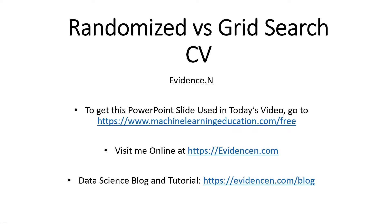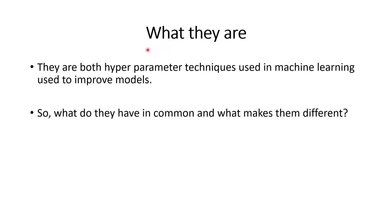Hello everyone, welcome to my YouTube channel. My name is Evidence and in today's video I'm going to share with you the difference between Randomized Search CV and Grid Search CV. To get this PowerPoint that I'm using today, just go to machinelearningeducation.com/free. You can visit me online at evidencen.com. So what are Random Search CV and Grid Search CV? They are both hyperparameter techniques used in machine learning to improve models.